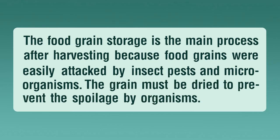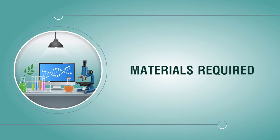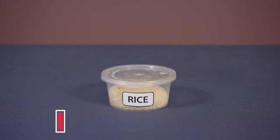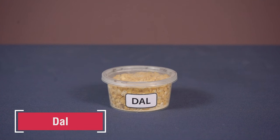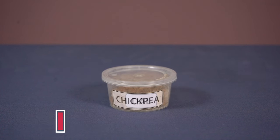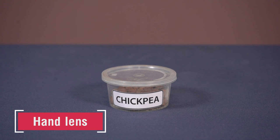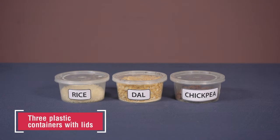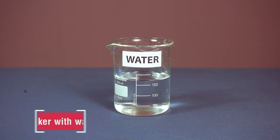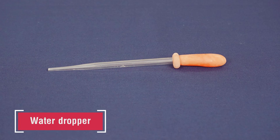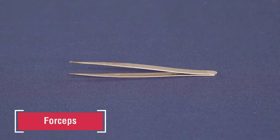Materials required: spoiled grains of rice, dal, and chickpea; three plastic containers with lids; a hand lens; glass slide; beaker with water; water dropper; and forceps.